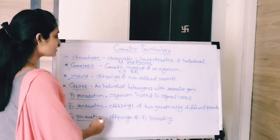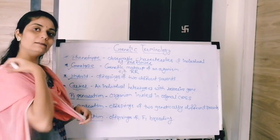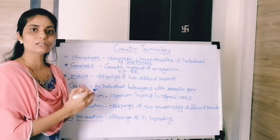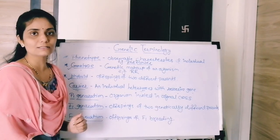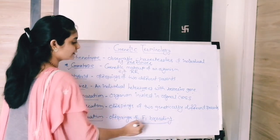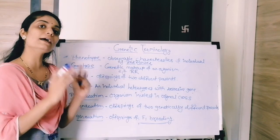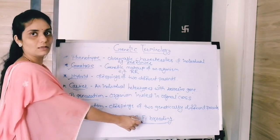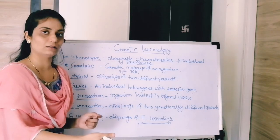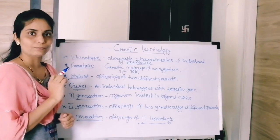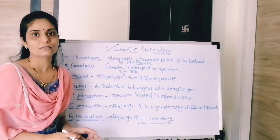Mendel first performed the parental generation cross, then obtained the first filial generation. For further experiments, he performed self-crossing within the F1 generation — this is called F1 breeding. Whatever offspring and results Mendel obtained from that F1 breeding are called the second filial generation. These are the important terms always used in genetics.